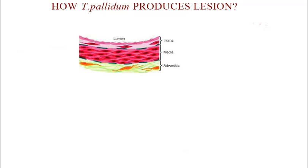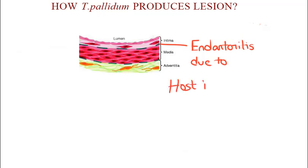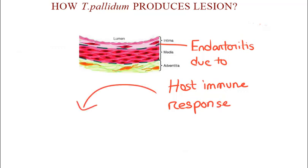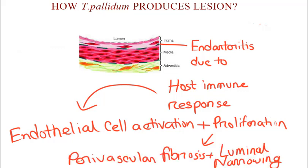Endarteritis plays a central role in tissue injury at all sites involved by syphilis. But, to be honest, its pathogenesis is not well understood. There is no evidence that the spirochete can cause any damage to the host tissue directly. Instead, it is thought that the host immune response is responsible for the endothelial cell activation and proliferation, which is the hallmark of endarteritis, which eventually leads to perivascular fibrosis and luminal narrowing.